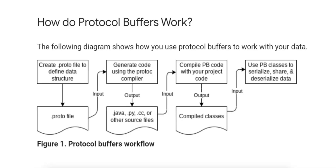What are the use cases of protobufs vs. JSON? Protobufs are ideal for systems where performance, efficiency, and bandwidth are critical, such as high-performance RPC systems like gRPC, microservices communication in distributed systems, data serialization for storage in databases, and network communication where compact size is crucial. JSON is better suited for scenarios where human readability and ease of debugging are more important, such as web APIs and HTTP-based communication, simple configuration files, as well as front-end development, for example JavaScript.